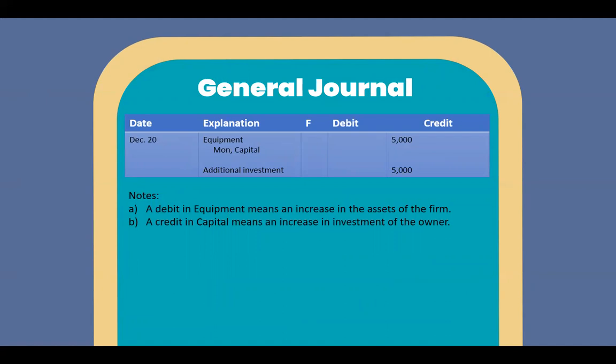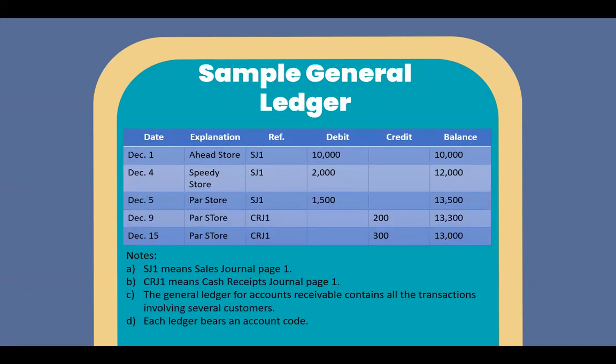In the general journal, a debit in equipment means an increase in the assets of the firm, while a credit in capital means an increase in the investment of the owner. In the sample general ledger, SJ1 means sales journal page 1, and CRJ1 means cash receipts journal page 1. The general ledger for accounts receivable contains all transactions involving several customers, and each ledger bears an account code.